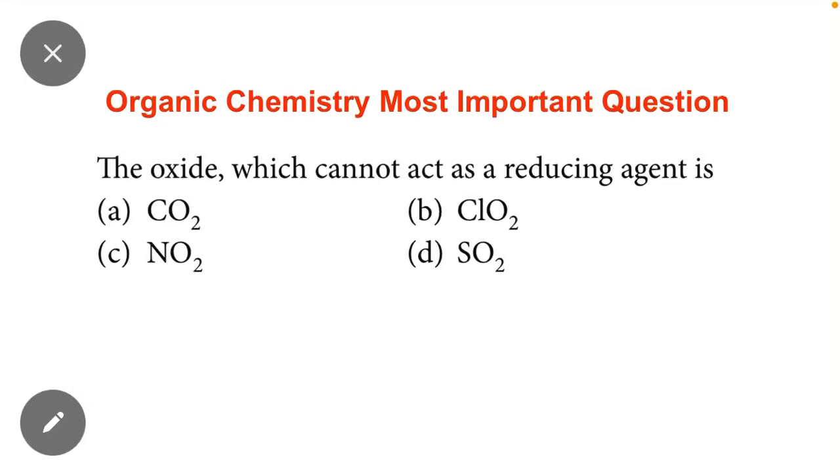Chemistry Academy students, in this video we will study the most important questions of electrochemistry. The question is: the oxide which cannot act as a reducing agent. So first of all, what is a reducing agent?